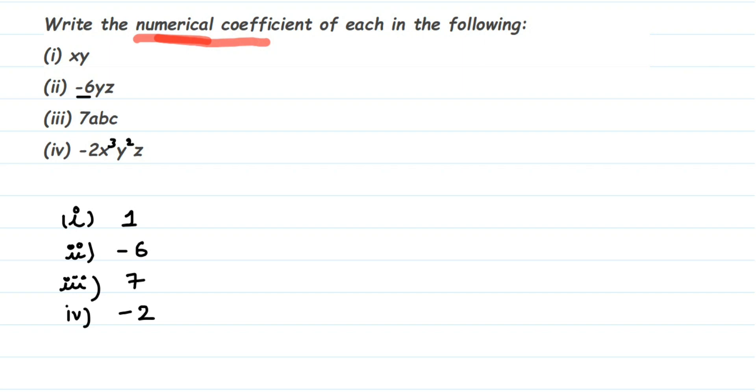I hope it's clear. It's very simple. In a given expression, you have to check for the number which is present in the beginning, at the starting of the given expression, and then you write it down. Remember that you should write along with the negative sign, and if there's no number present, it means there's a one present there.